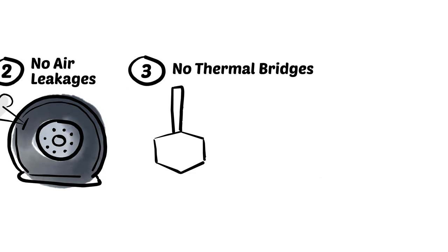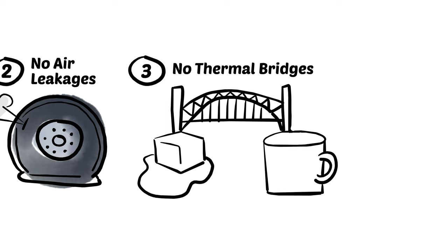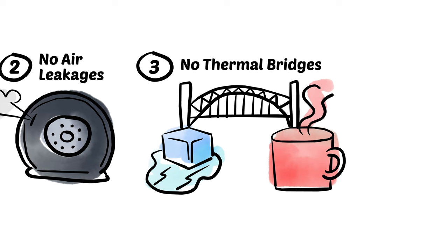3. No thermal bridges. A thermal bridge is like a road for heat energy in which warmth can travel right through your walls. As a matter of fact, most of our houses have thermal highways in our walls where heat can easily travel to the inside.